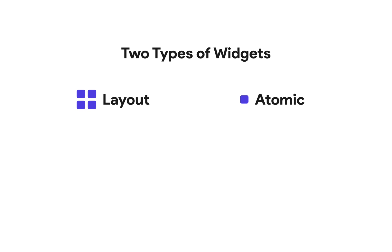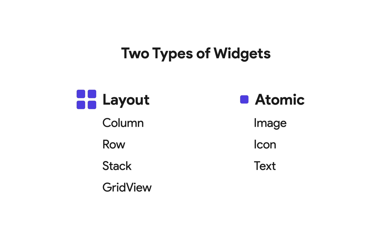Layout widgets are designed to lay out and organize other widgets — that is, layout widgets have children. Atomic widgets are single items like images, icons, or text. They don't have any children. This video is giving you a method for figuring out your layout widgets, because honestly, that's the hardest part. Alright, enough preliminaries. Let's get into the system.